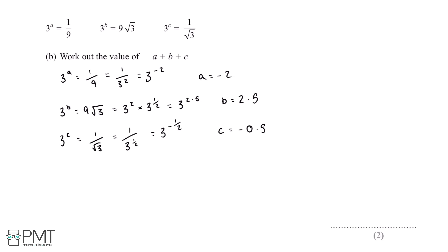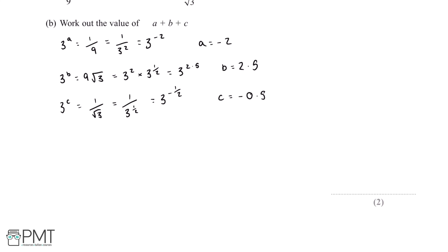The final thing we need to do is substitute a, b and c into a plus b plus c. So a plus b plus c is equal to negative 2 plus 2.5 minus 0.5, and this gives us a final value of 0.